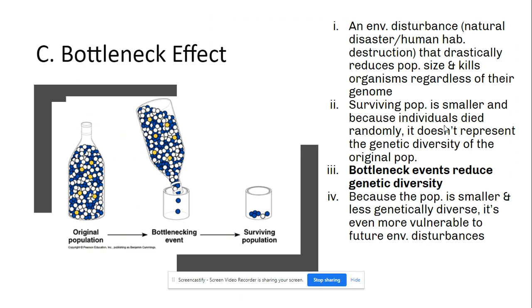Now here is what's called the bottleneck effect. This is an environmental disturbance, usually caused by some sort of natural disaster or human habitat destruction, that drastically reduces the population size and kills organisms regardless of their genome. As a result, the surviving population tends to be very small. Individuals have died randomly, so it doesn't really represent the genetic diversity found in the original population. A bottleneck event typically reduces genetic diversity, making the population far more vulnerable to any future environmental disturbances.